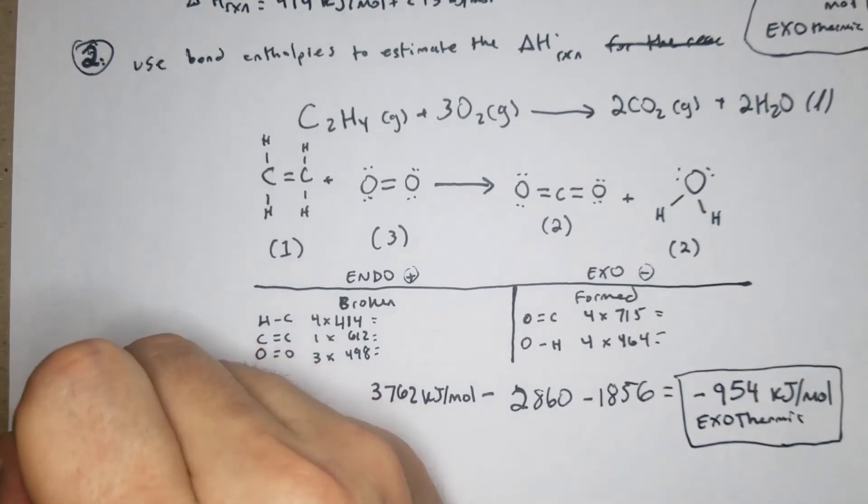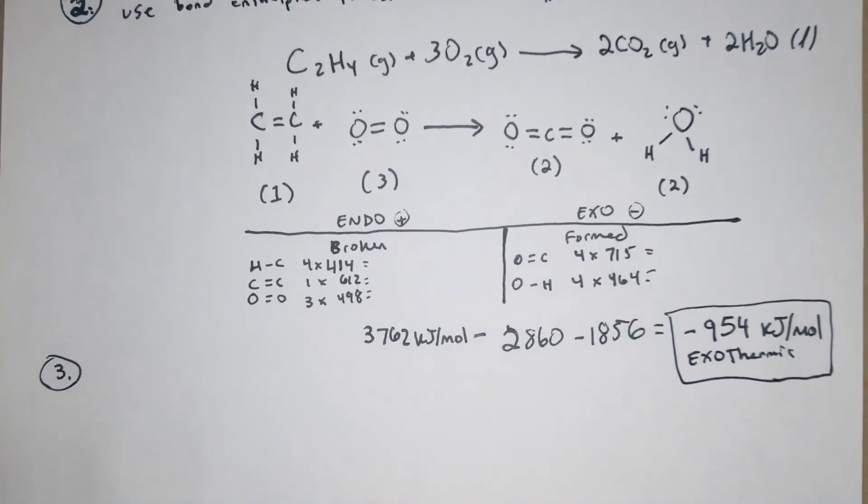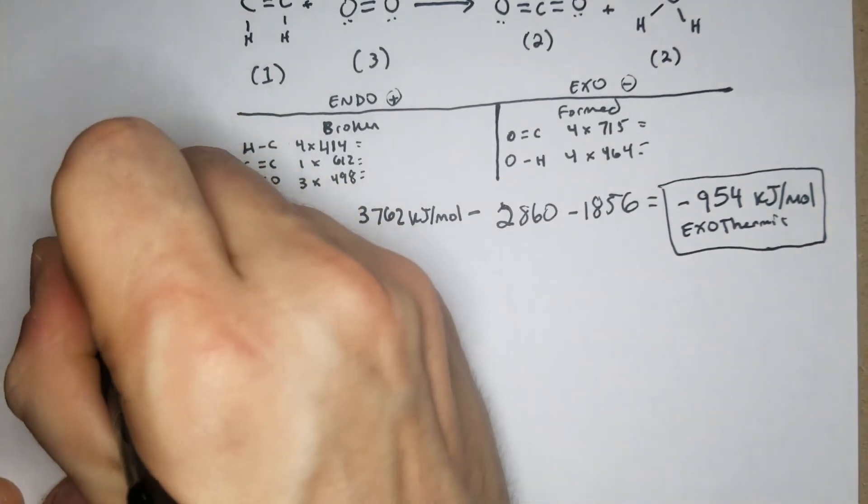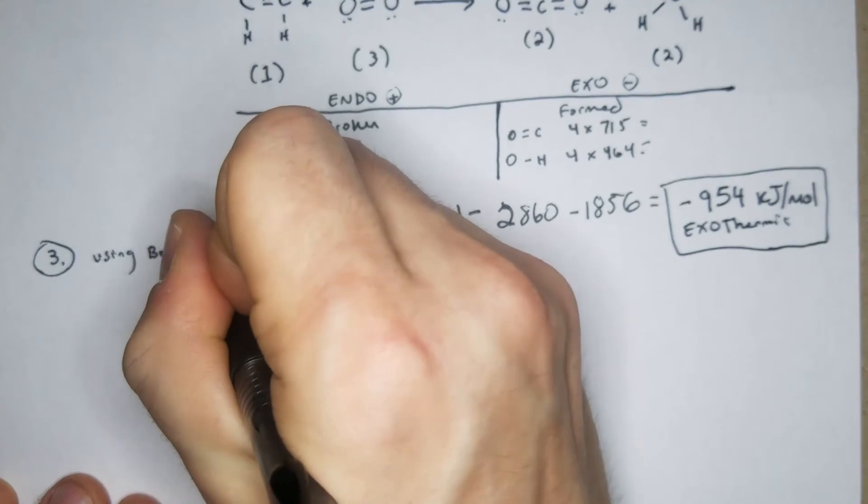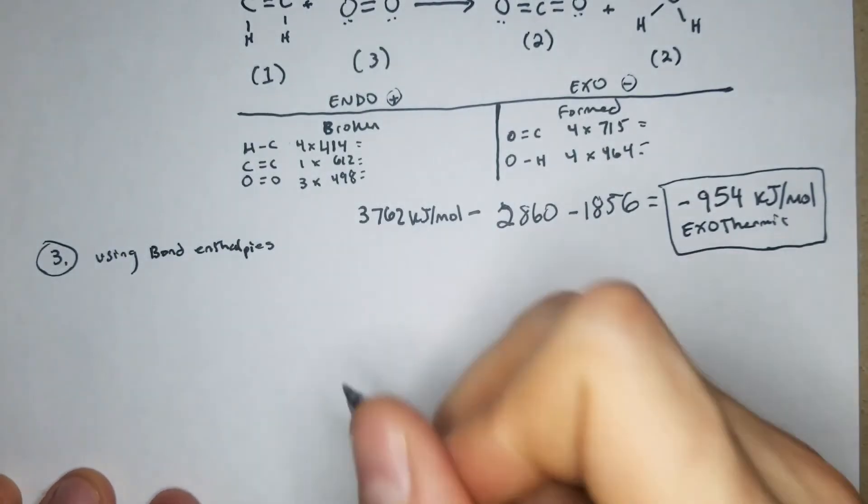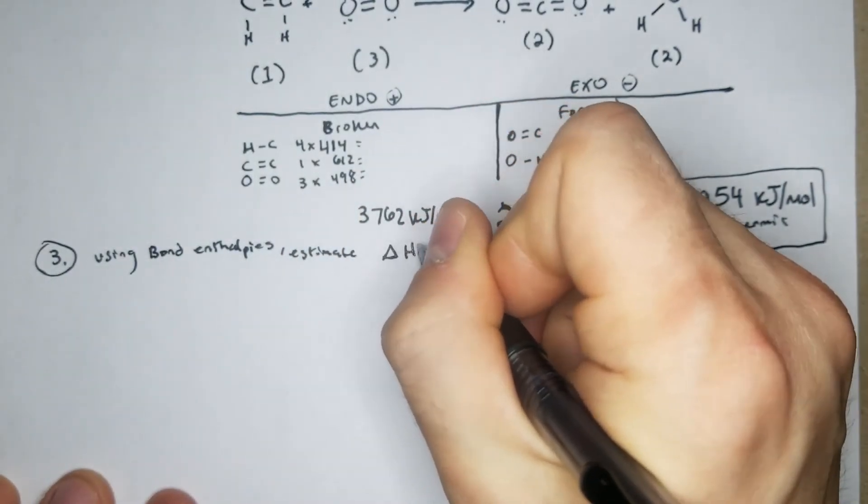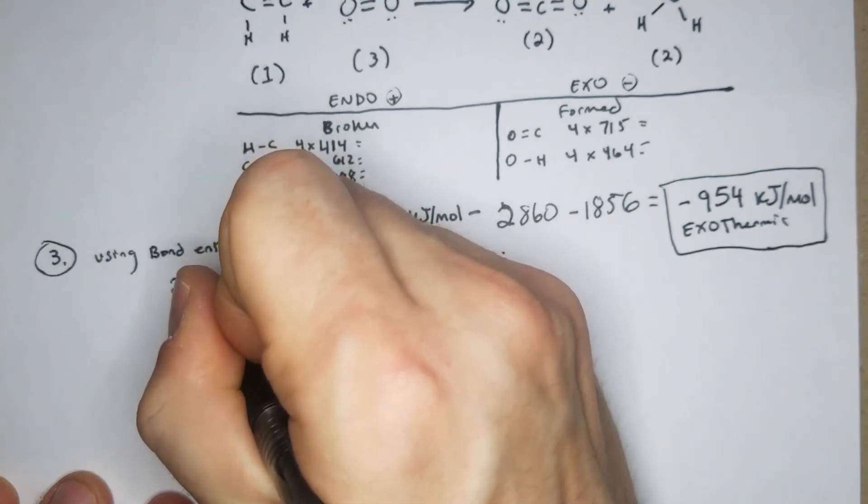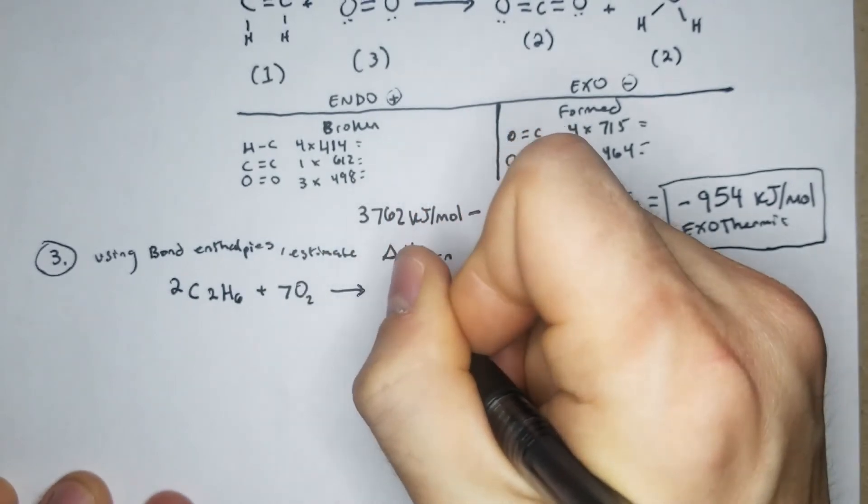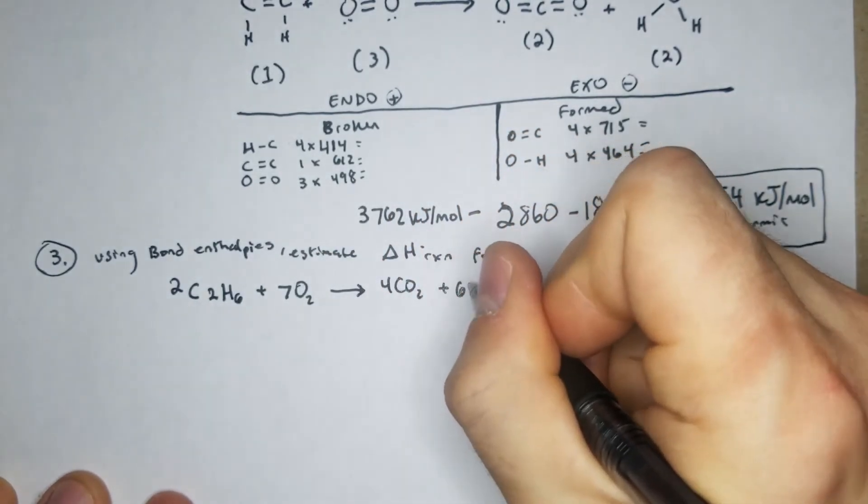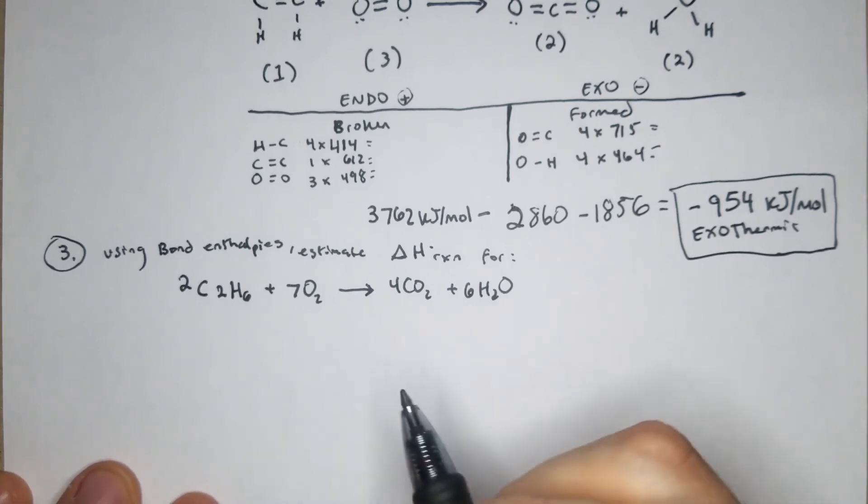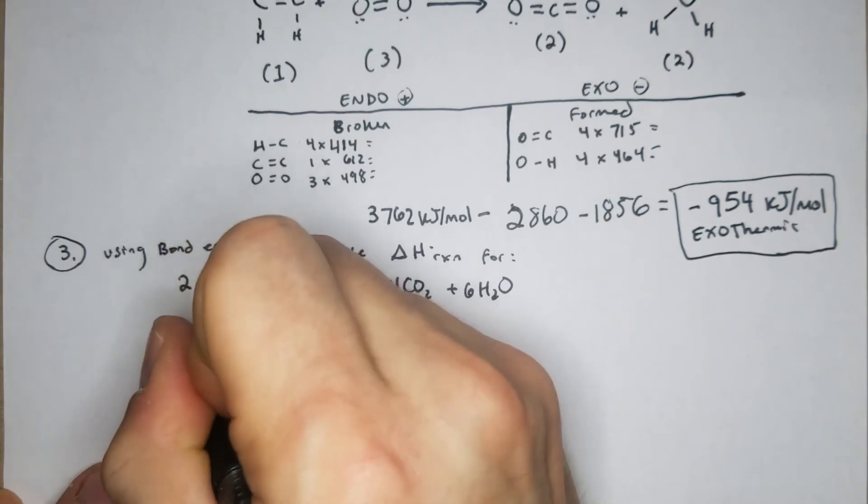All right great, so we'll just do one more. Let's see, try to think of something that might be more tricky. Using bond enthalpies, estimate for 2C2H6 plus 7O2 yields 4CO2 plus 6H2O. So obviously having more variation in the mole ratios or larger numbers on them is going to make you have to do more multiplication and larger numbers, potentially greater chance at making errors, so just be mindful of that.